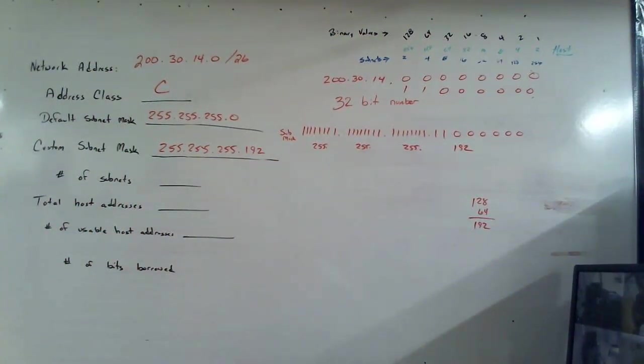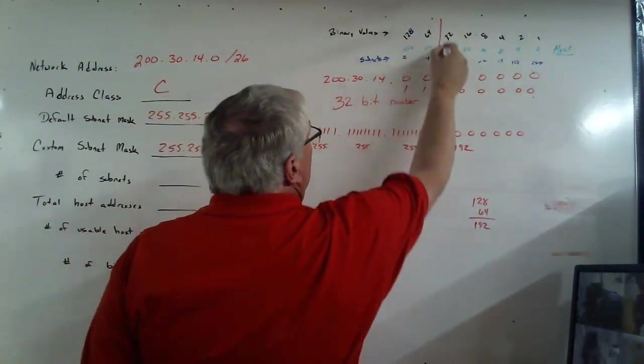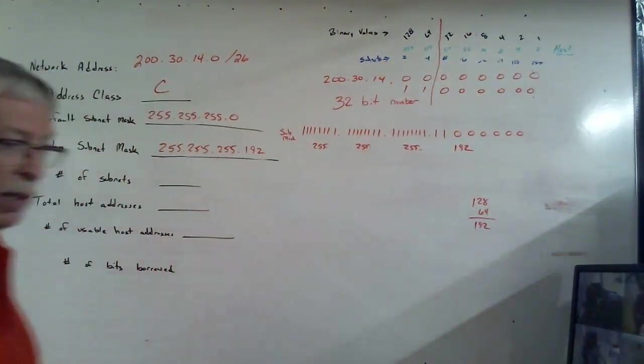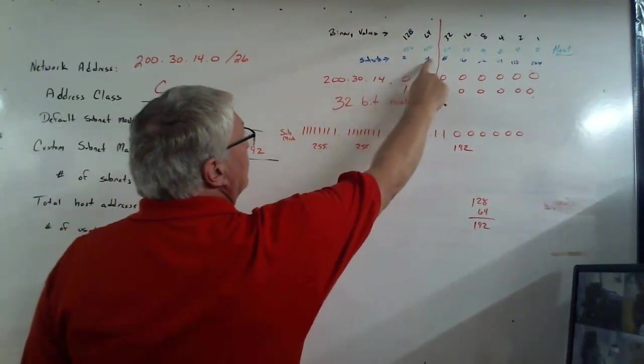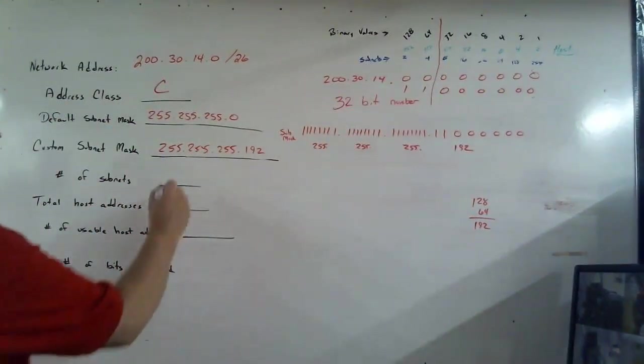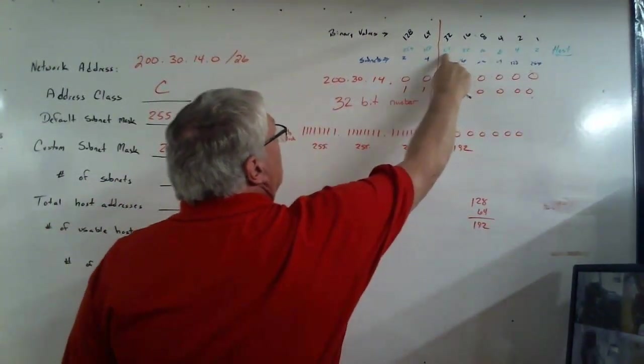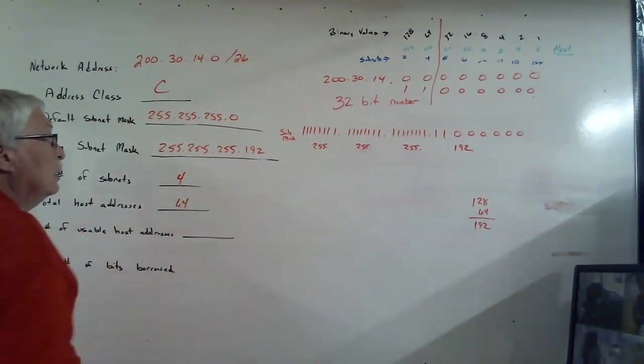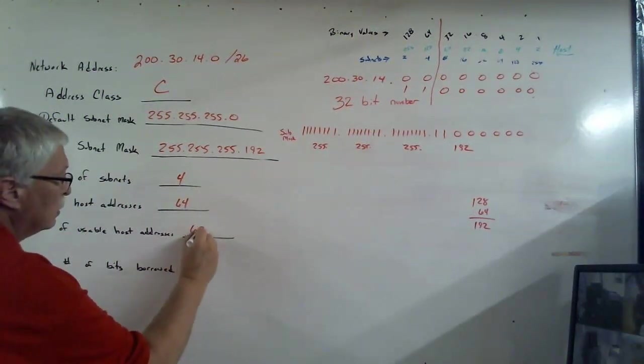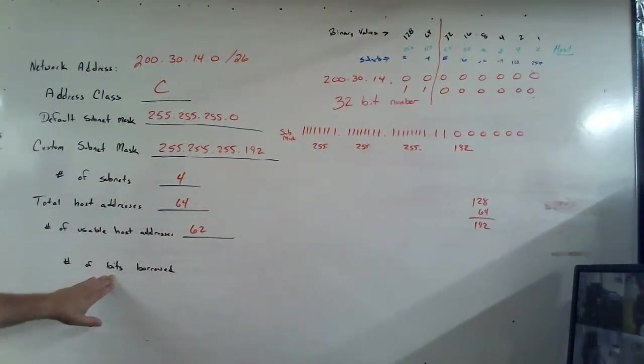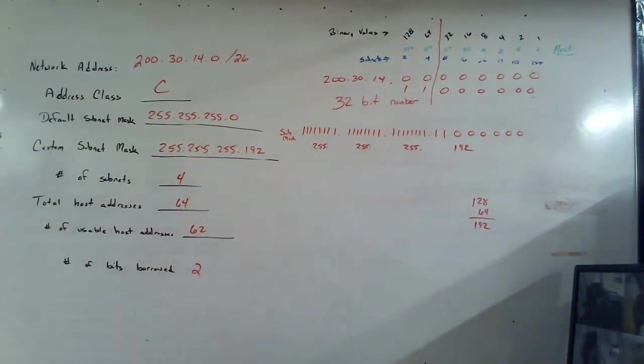And so, that is my custom subnet mask. Triple 255, 192. Now, that being said, I have borrowed two bits. They're right here. That's where my line goes. Now, I can start answering those questions. How many subnets? Well, the number before the line is 4. How many total hosts? Well, the number before the line is 64. Total usable, if I subtract 2, 62. How many bits did we borrow? Well, they're right up here. There's two of them.